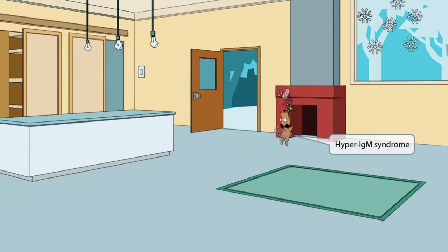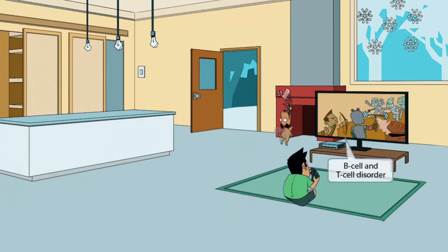This scene takes place inside someone's home during the Christmas season. We can see a bunch of snowflakes outside the window that are shaped like an IgM molecule. We've also included a hyperdog that is covered in these snowflakes because it just came from outside. The IgM-shaped snowflake along with the hyperdog should help you remember that this image is all about hyper-IgM syndrome.